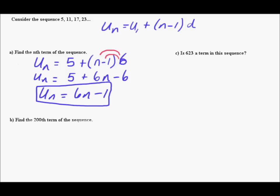Now let's test it here. The first term is 5, so sub in 1 for n. 6 times 1 is 6 minus 1 is 5. For the second term, 6 times 2 is 12 minus 1 is 11. 6 times 3 is 18 minus 1. We got it right, it's good.